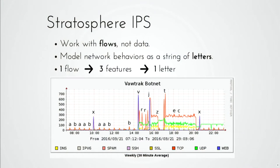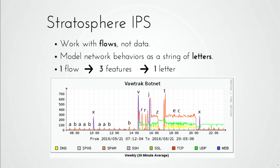So why are we analyzing this in the network? We're looking at how malware and normal computers behave in the network. What we're doing is taking flows — no packets, no data, just metadata. From the flows, we create a string of letters. From one flow, we extract three features: size, periodicity, and duration of each flow in the network. We group these together, and based on these three features, we assign a letter.